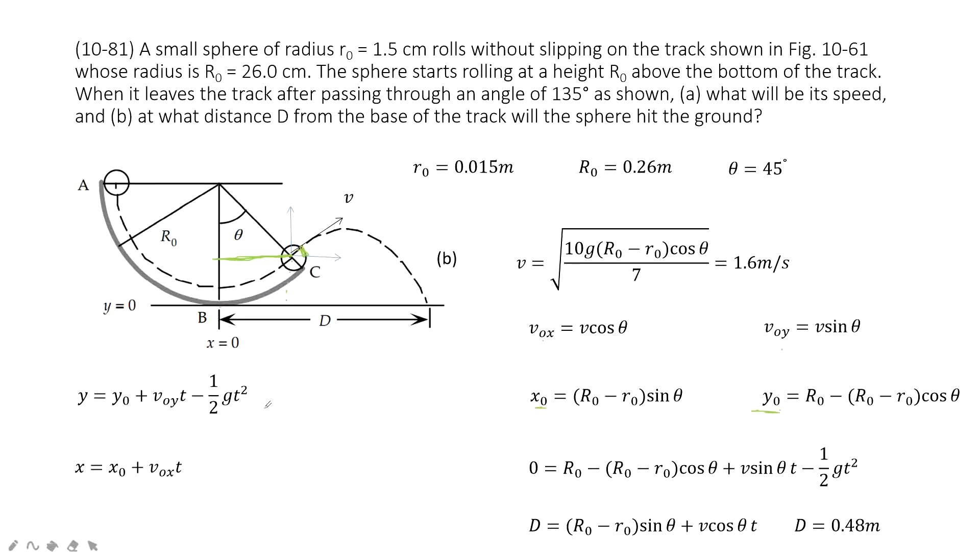Now we can consider for the projectile motion. The acceleration on x component is zero. On y component is the gravity g, negative g. Then you input the known quantities x naught, v x, v o x.